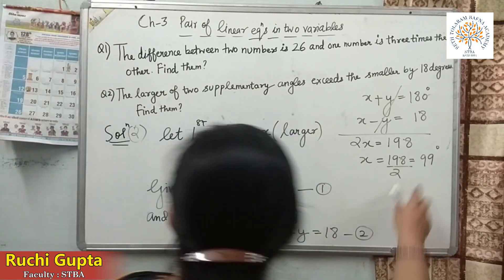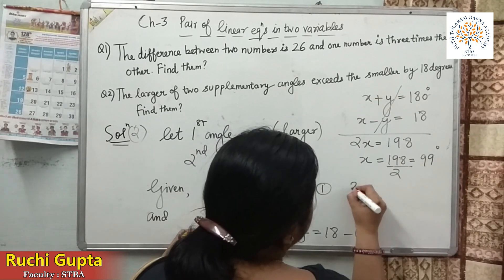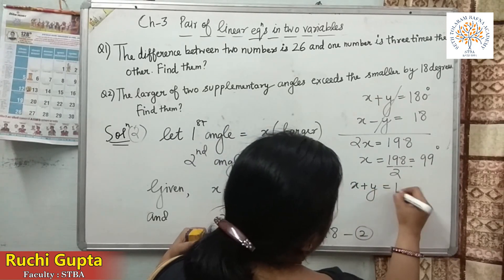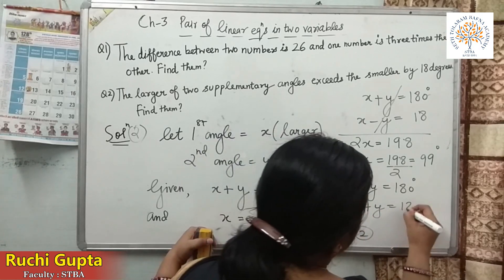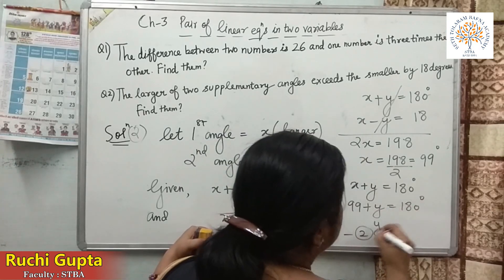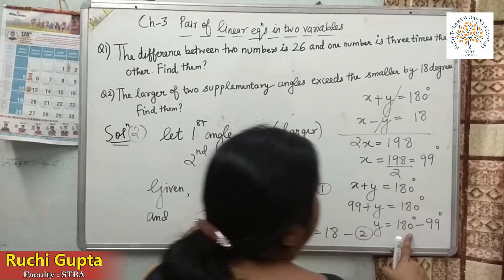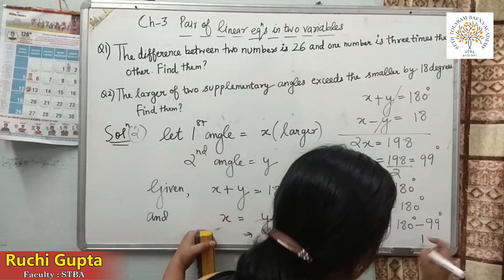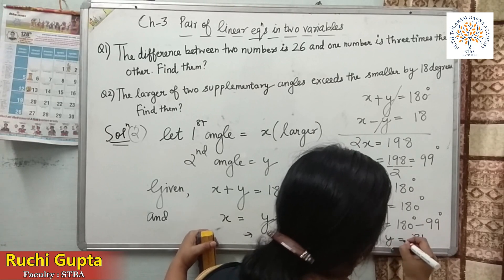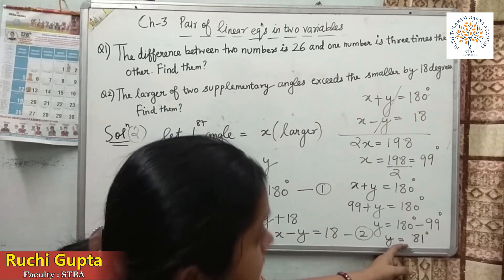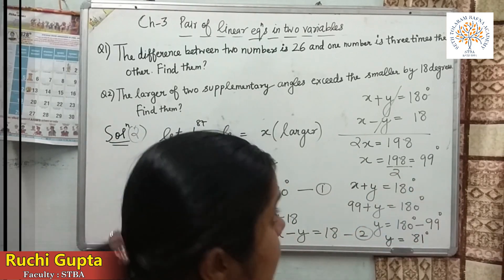Our first angle is 99 degrees. To find Y, substitute X equals 99 into the first equation: 99 plus Y equals 180, so Y equals 180 minus 99, which is 81 degrees. Students, you can see that the larger angle is 99 degrees and the smaller angle is 81 degrees.